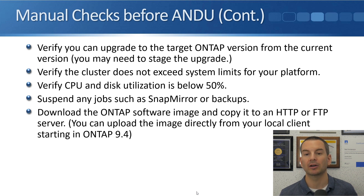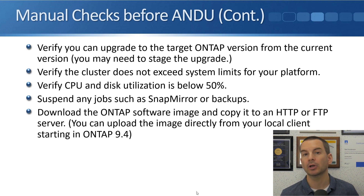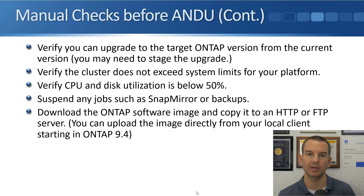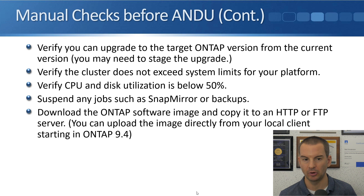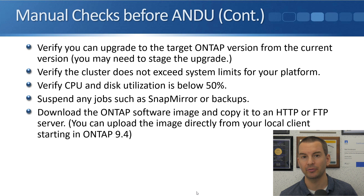Verify you can upgrade to the target ONTAP version from the current version — you may need to stage the upgrade. For example, if you're currently on ONTAP version 9.2 and want to upgrade to 9.4, you can't go straight from 9.2 to 9.4; you would have to upgrade from 9.2 to 9.3 first, and then from 9.3 you can upgrade to 9.4. Also verify the cluster does not exceed system limits for your platform — for example, make sure you don't have too many snapshots.